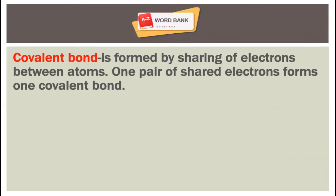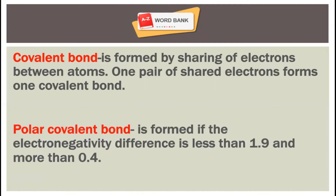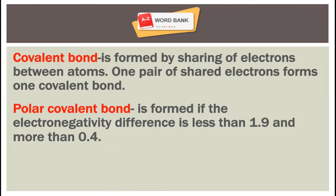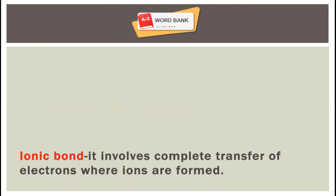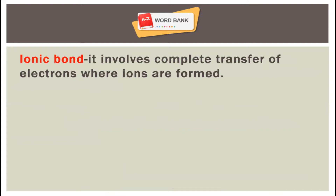Let us define first the following words used in this video lesson. Covalent bond is formed by sharing of electrons between atoms; one pair of shared electrons forms one covalent bond. Polar covalent bond is formed if the electronegativity difference is less than 1.9 and more than 0.4. Non-polar covalent bond is formed if the electronegativity difference is equal to 0.4 or less. Ionic bond involves complete transfer of electrons where ions are formed.